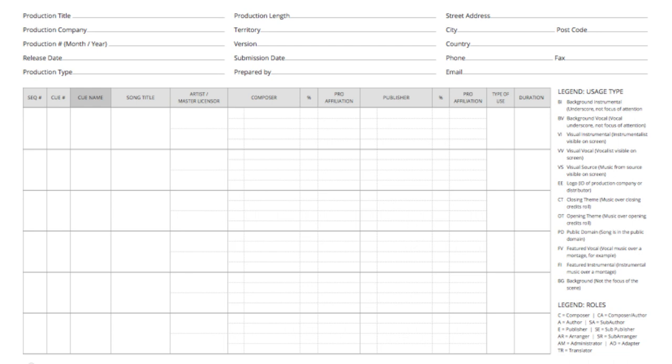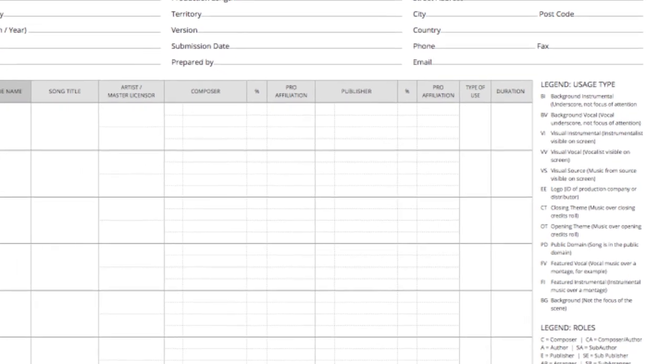The composer's name, percentage of ownership, performing rights affiliation, the name of the publisher and their percentage, their PRO affiliation, which should be the same as the composer's, the type of use. You'll see the usages on the right side over there where it reads legend use type.